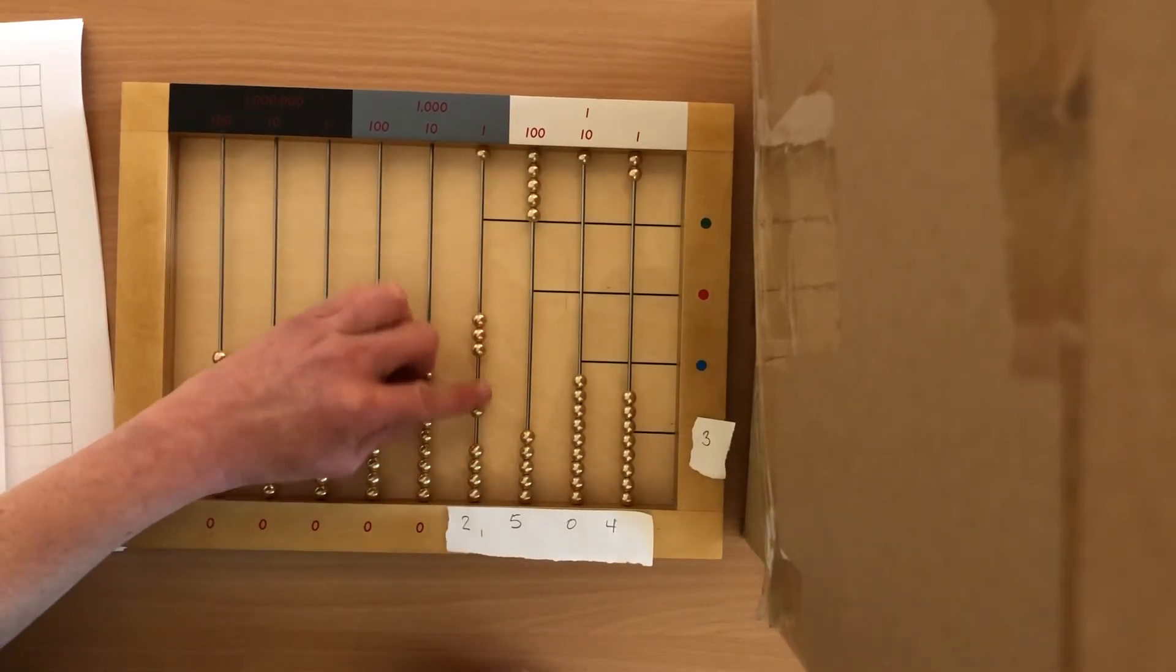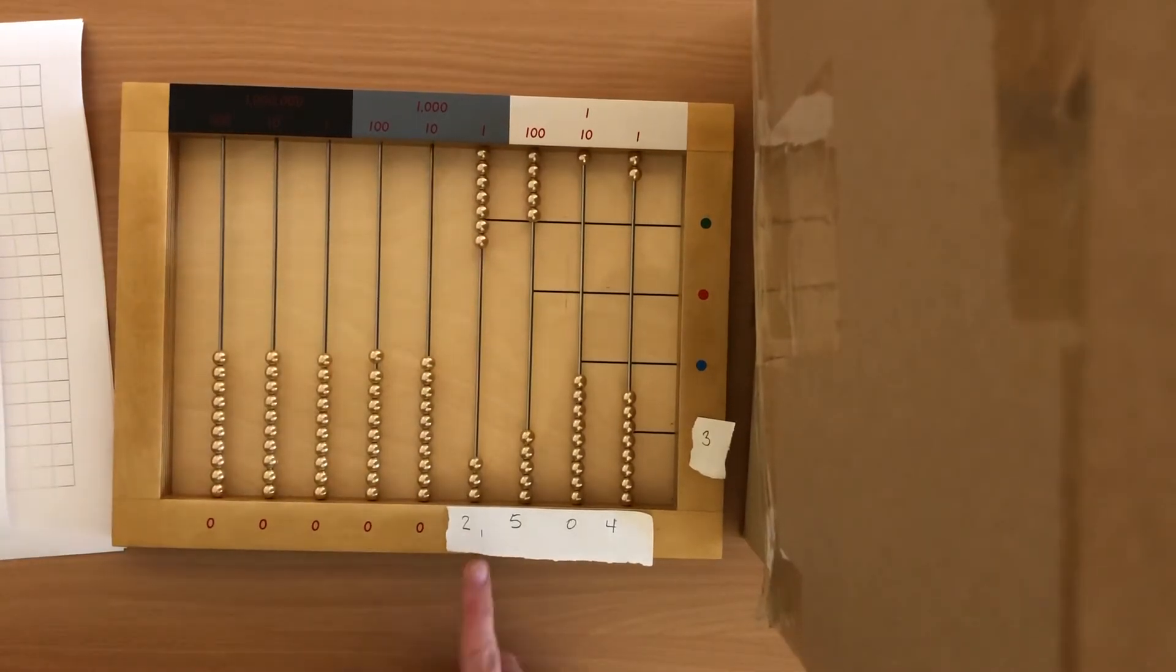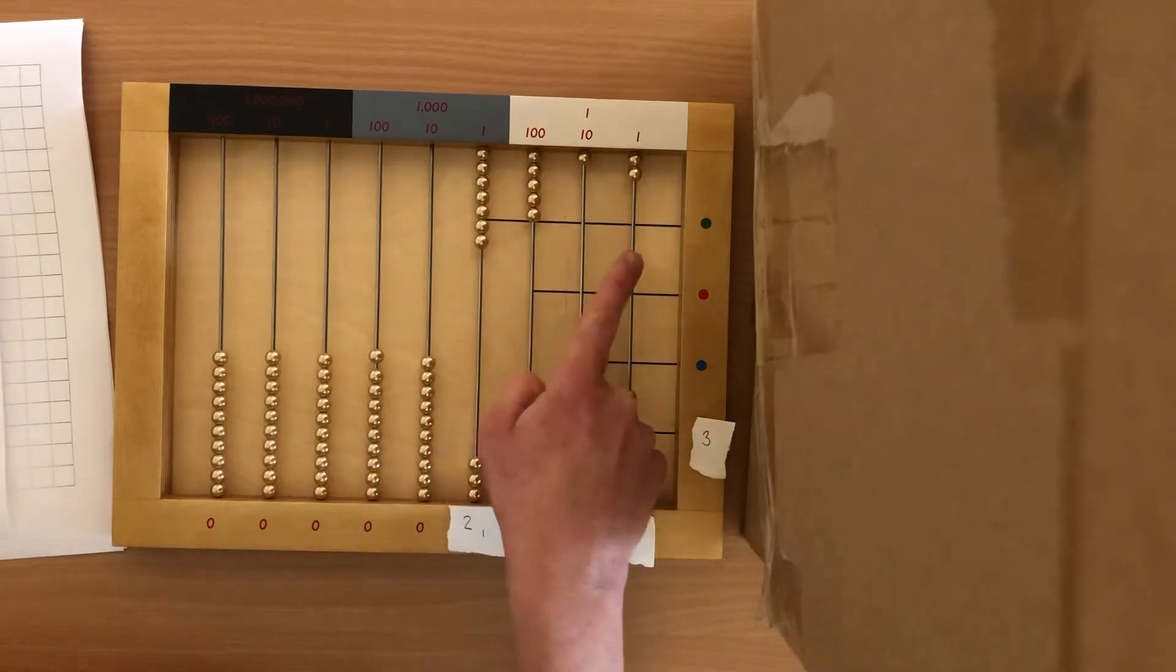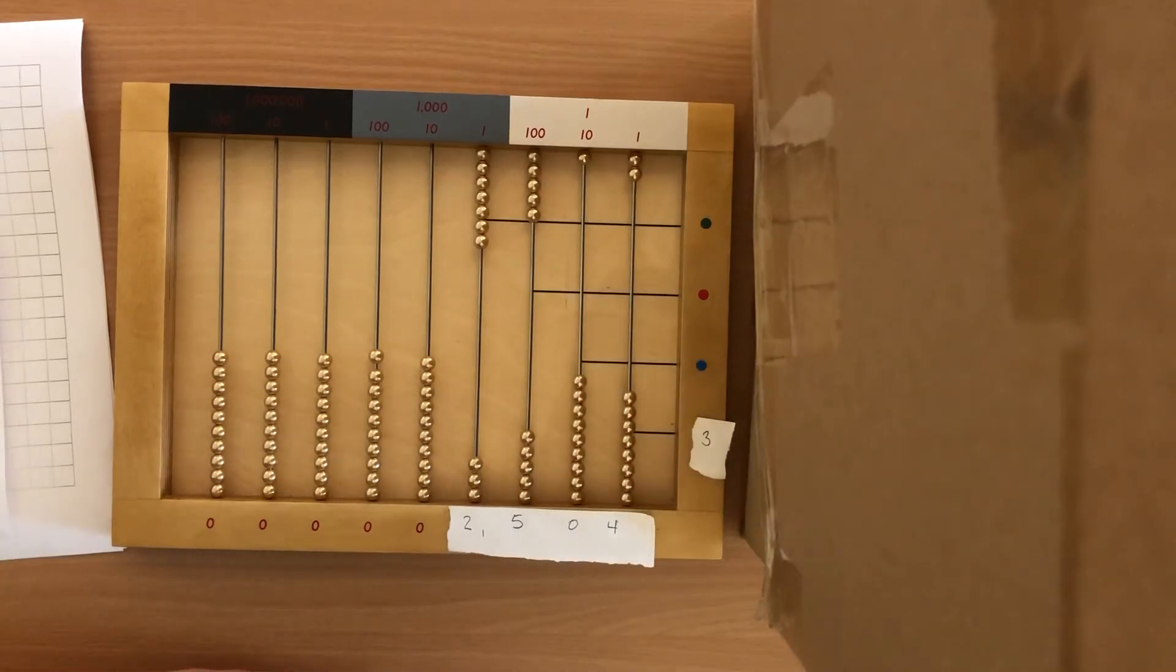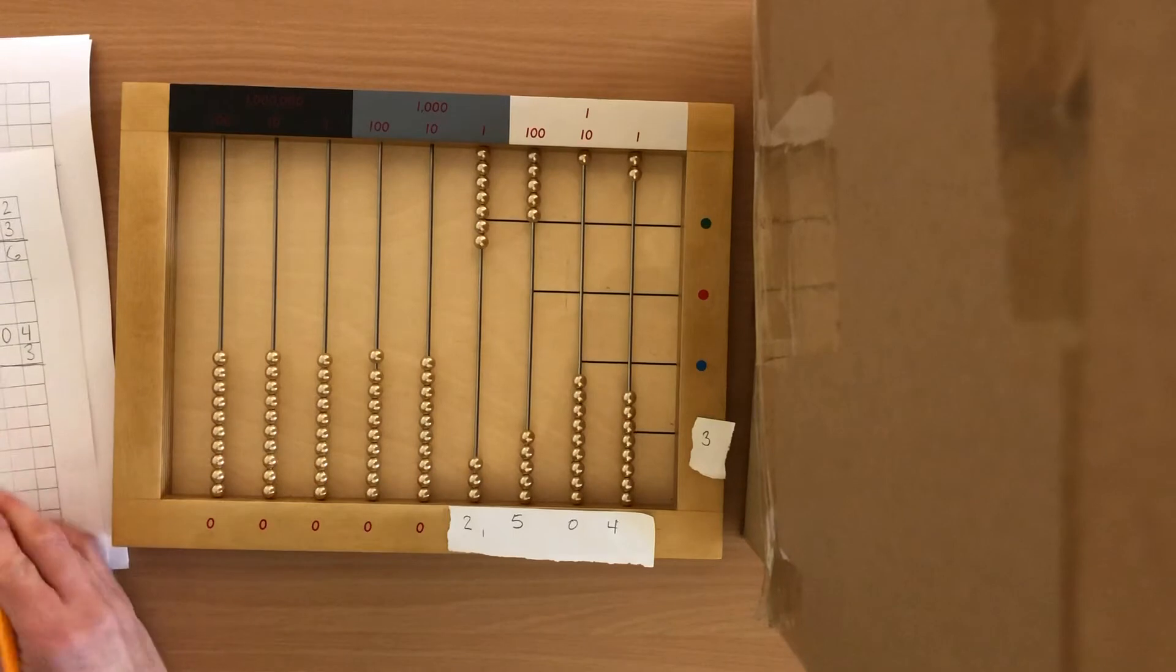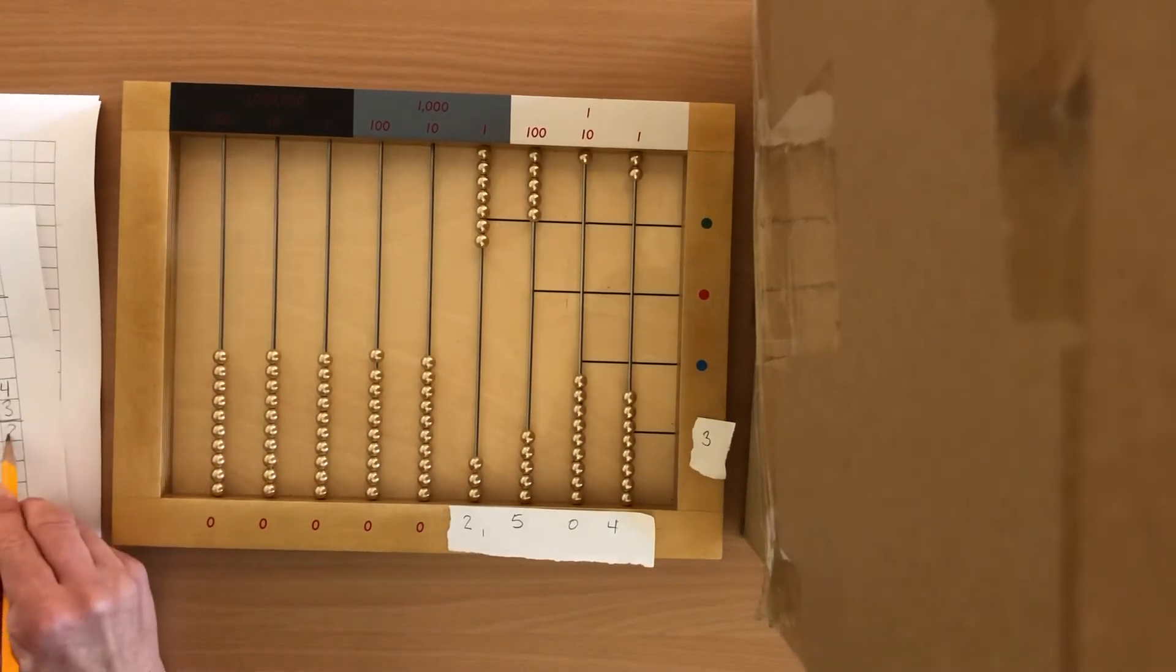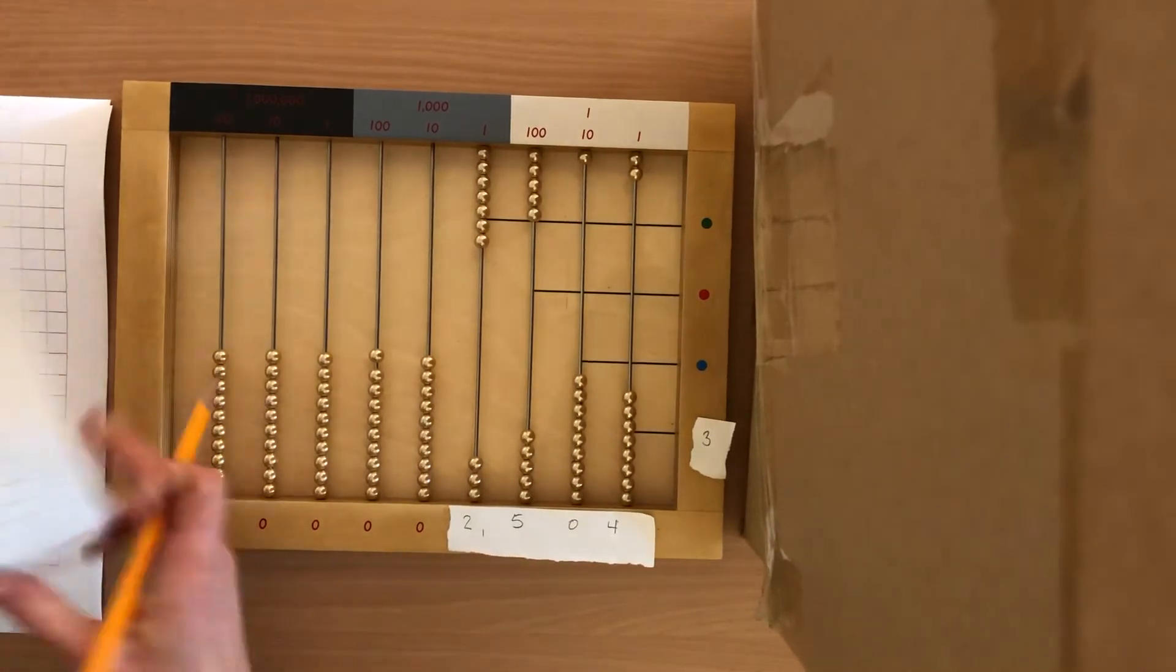1, 2, 3, 4, 5, 6. All right. So 2,504 times 3 equals 7,512. And 12. So I'm gonna record that. 2, 1, 5, 7. Okay.